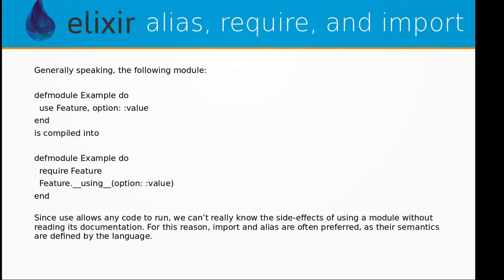Generally speaking, the following module definition: defmodule Example do use Feature, option: value end — is compiled into: defmodule Example do require Feature; Feature.__using__(option: value) end. Since use allows any code to run, we can't really know the side effects of using a module without reading its documentation. For this reason, import and alias are often preferred as their semantics are defined by the language.